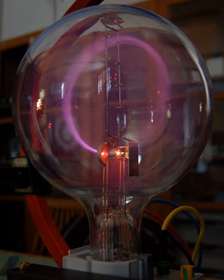Cathode rays are streams of electrons observed in vacuum tubes. If an evacuated glass tube is equipped with two electrodes and a voltage is applied, glass behind the positive electrode is observed to glow.